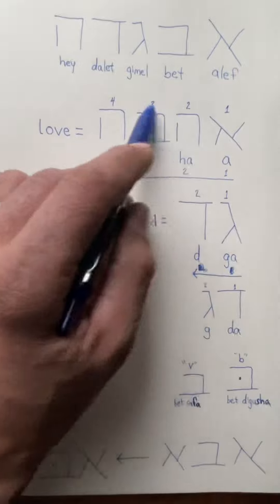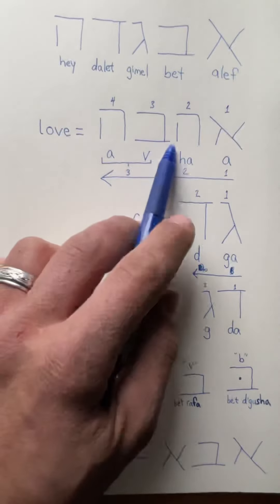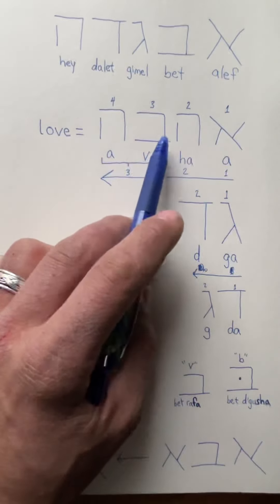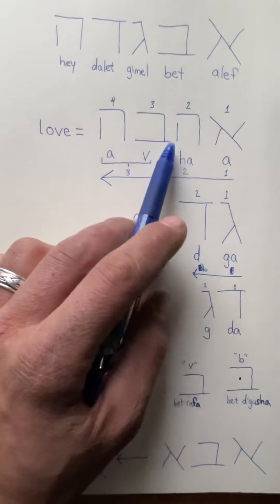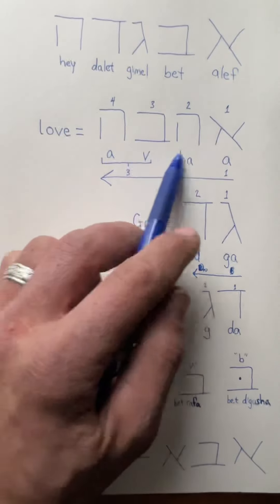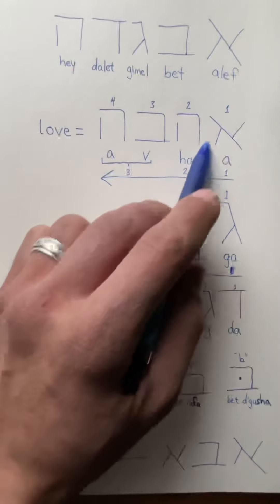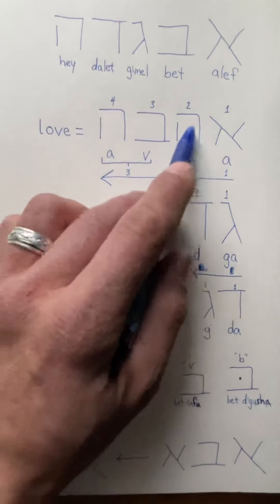I wonder if this word came from 'hav'. Hav means to give. They say 'havu la adonai kavod vaoz' - give to God glory and power. I don't know how to say it, but that's in the Psalms. It appears kind of, this word a bit.